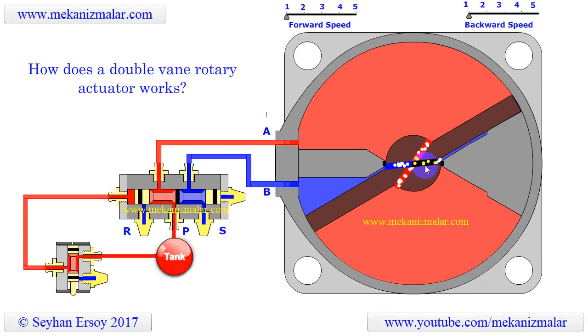Also, with the equal pressure force acting on two opposing sides of the vane, the torque exerted on the rotating shaft is doubled with respect to a similar sized single-vane rotary actuator.